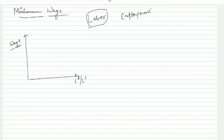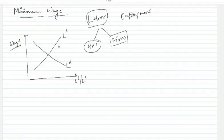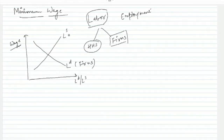Labor demand represents those who are demanding labor — that is, firms. Labor supply represents those offering labor — households, people like us who want to get employed and are in the job market. Now let's look at the application of price floor in the form of minimum wage. Since wages are nothing but prices, the government is setting a minimum price for labor — the minimum price that must be paid to workers — because the government considers this justified for the work that labor offers.